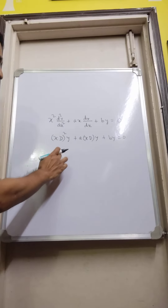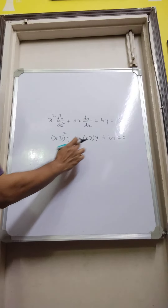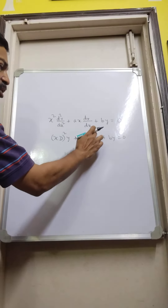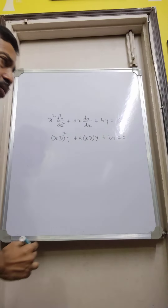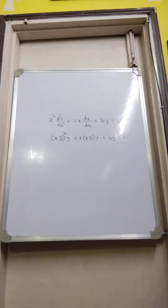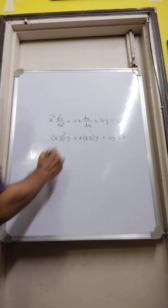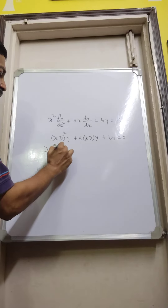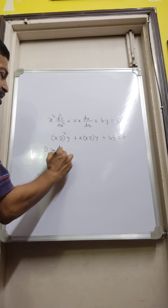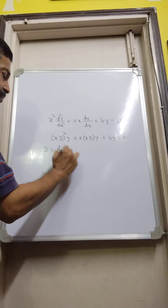Here it is (xD)², that is xD to the power 1, and here it is xD to the power 0. Obviously, this D stands for d/dx.